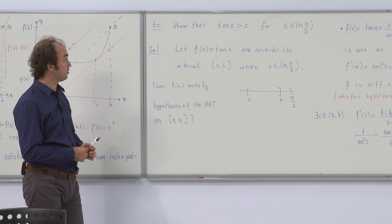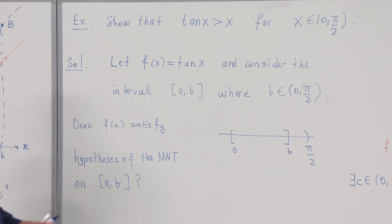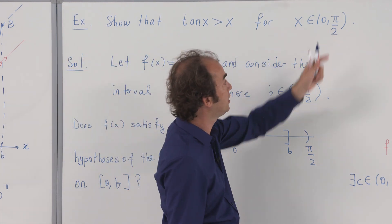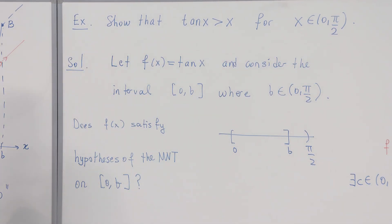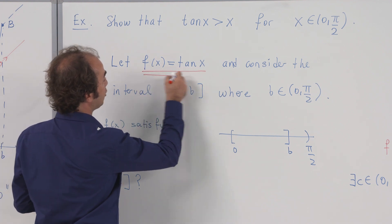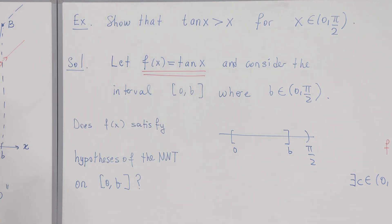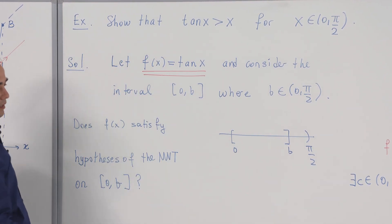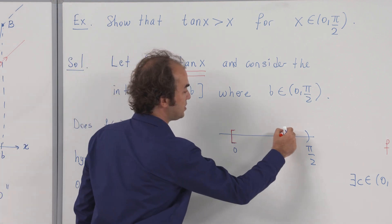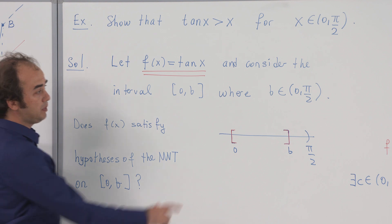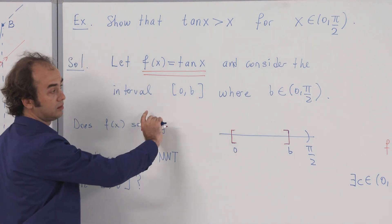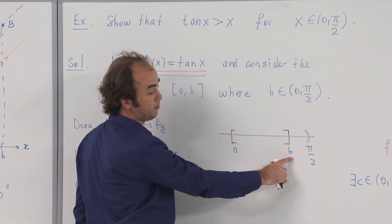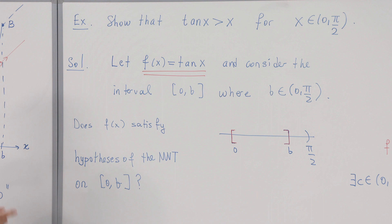Now an example we are going to solve using the mean value theorem. The question is: show that the inequality tan(x) > x is true for x belonging to the interval (0, π/2). I'm going to solve this using the mean value theorem. Let f(x) equal tangent of x, and consider the interval [0, b] where b is in the open interval (0, π/2). Since b is not equal to 0, this is indeed an interval. Since b is not equal to π/2, the right endpoint never touches π/2.